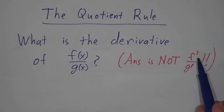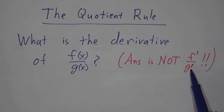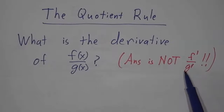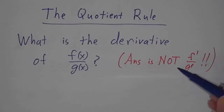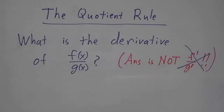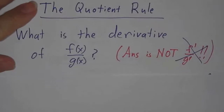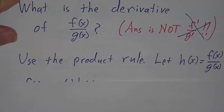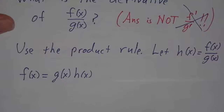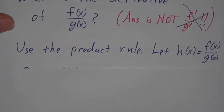And do not say f prime over g prime. That's dead wrong. No f primes over g primes. And the fact is, if we know the product rule, we can figure out the quotient rule.